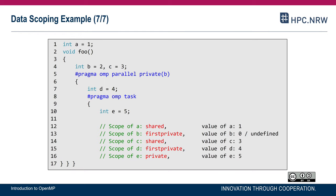Looking at the values: a remains shared, so its value is 1. b is interesting — it's zero or undefined, because b is made private at the parallel region. A private copy is uninitialized, meaning it has an undefined value; however, many implementations initialize private scalar variables with zero, which is why I wrote b as zero or undefined. c is shared. d is captured as a firstprivate variable. e is defined within the task construct. In consequence, you can see the resulting values.